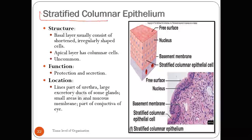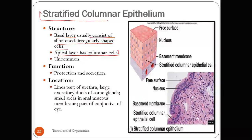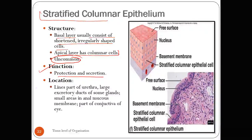Stratified columnar epithelium is a fairly rare type. The basal layer consists of shortened, irregularly shaped cells, while the apical layer has columnar cells — similar to stratified cuboidal epithelium where only the apical layer reflects the named cell shape. Like stratified cuboidal, it is uncommon. Its functions are protection and secretion. Location: lines part of the urethra, large excretory ducts of some glands, small areas in anal mucous membrane, and part of the conjunctiva of the eye.